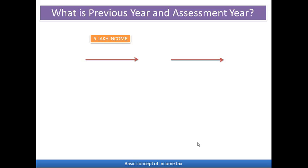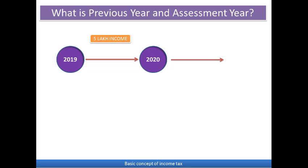A very important concept is previous year and assessment year. The previous year is when our income is earned, and the assessment year is when we calculate and pay the tax on that income. For example, if 2019–2020 is our previous year, the income earned in that year — say five lakh rupees — is taxable in the assessment year 2020–21. The tax is not paid in the previous year itself but in the next year, the assessment year.